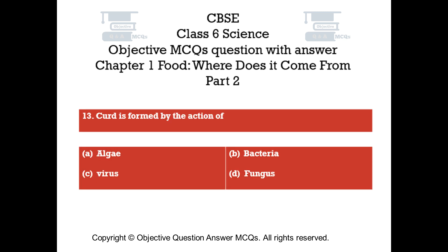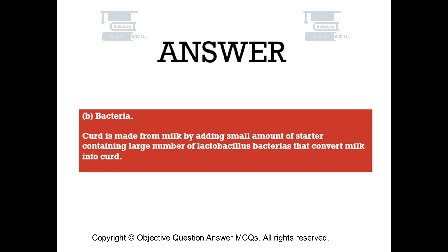Question number 13. Curd is formed by the action of: Option A: Algae. Option B: Bacteria. Option C: Virus. Option D: Fungus. The right answer is Option B. Curd is made from milk by adding a small amount of starter containing a large number of lactobacillus bacteria that convert milk into curd.